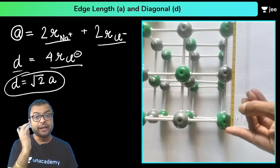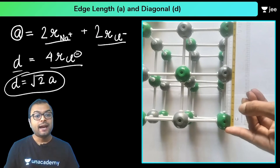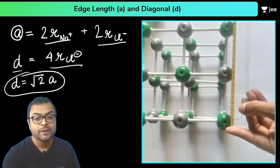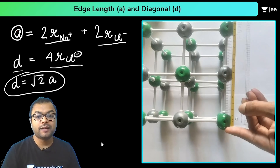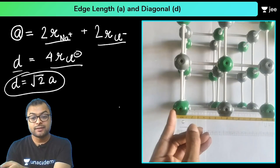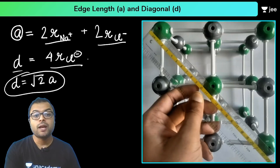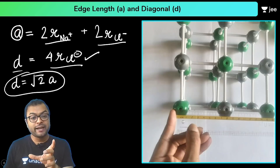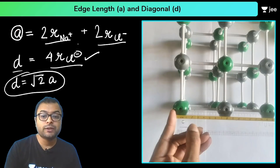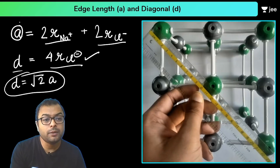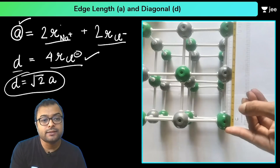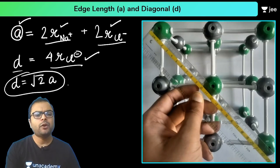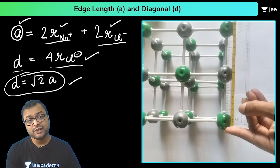Finally, let's look at the relation between the radius of these ions and the edge length A and diagonal D of the unit cell. The face diagonal consists of 4R(Cl⁻) — that is, the diagonal equals 4 times the chloride ion radius. The edge length consists of 2R(Na⁺) + 2R(Cl⁻). This is the standard geometric relation for the NaCl structure.